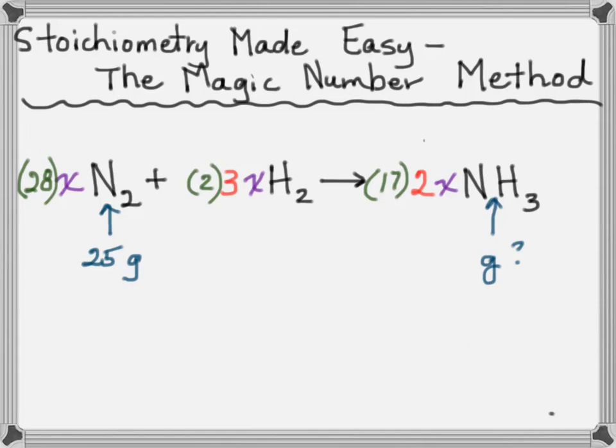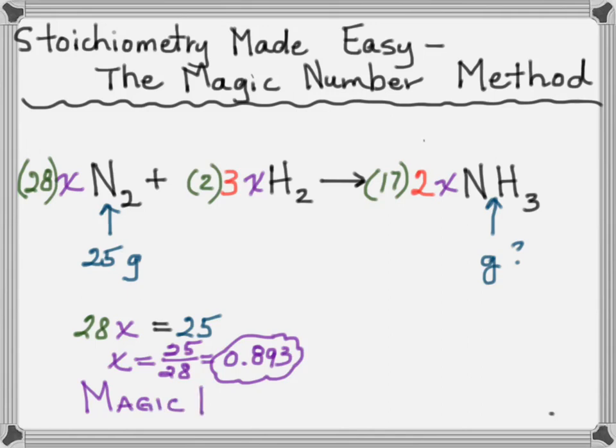Here's how it works. You simply solve for X. X is your magic number. 28X equals 25, so X equals 25 divided by 28 or 0.893. That's our magic number for this problem. It will be different for every problem that you do.